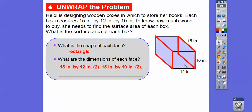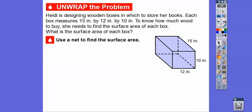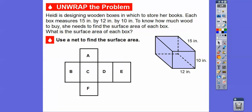And then we've got a front piece and a back piece. The front piece is 12 by 10, same with the back piece. So we've got six rectangles. We're going to use a net — remember, a net is if we flatten that out to find the surface area.